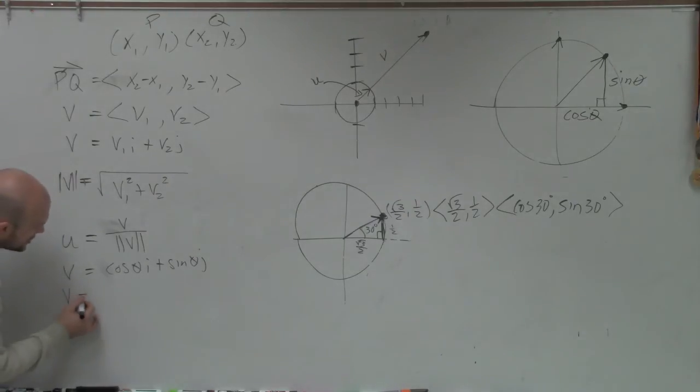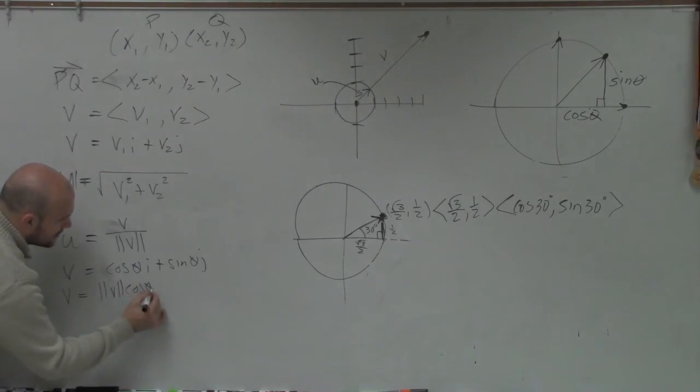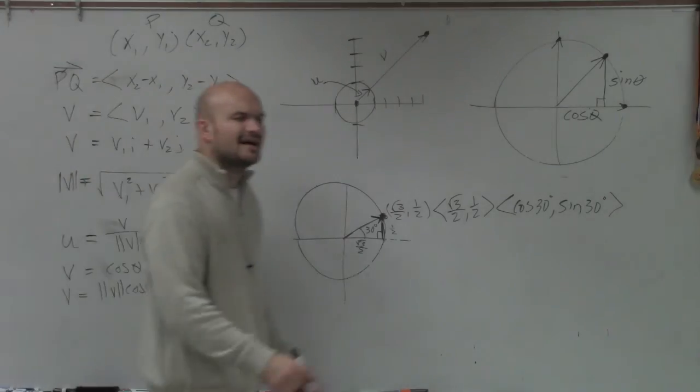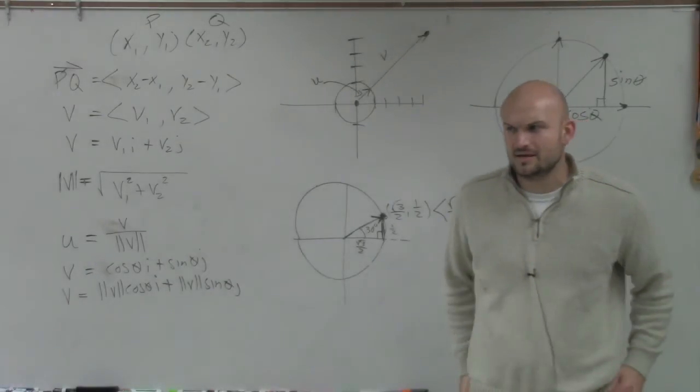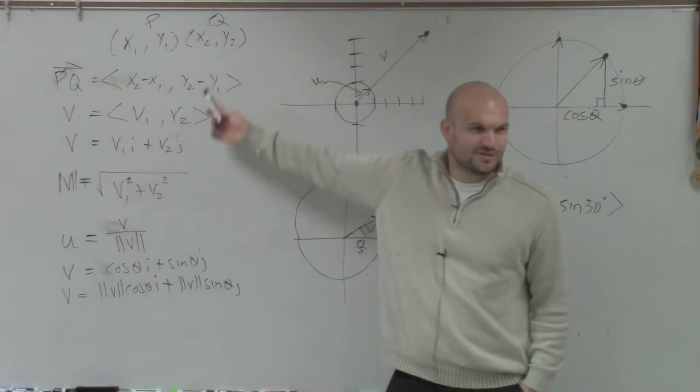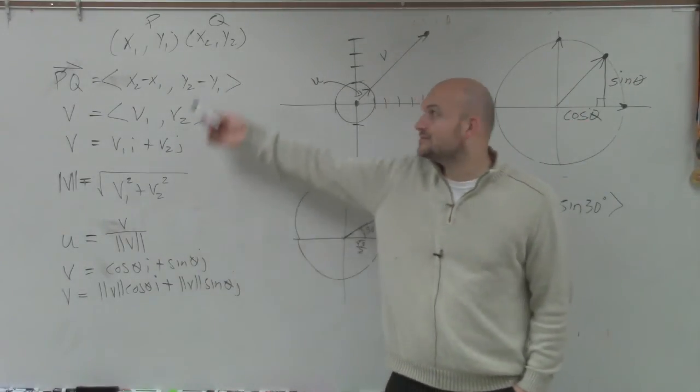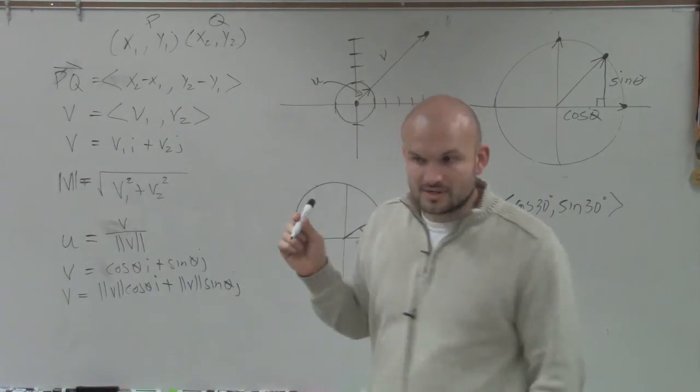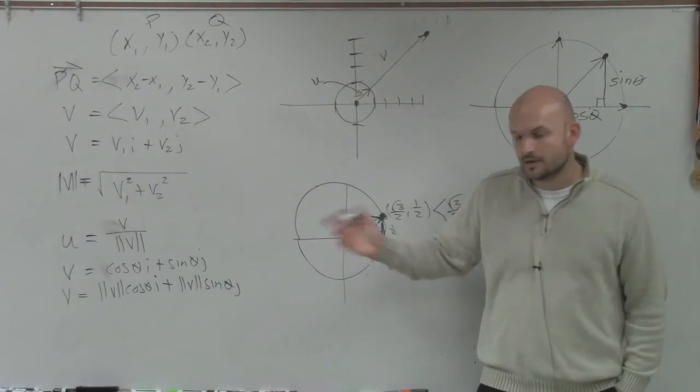So, therefore, if we're given a vector in terms of its magnitude and angle, I can now multiply by the magnitude of that vector. Does that kind of make a little sense? Anybody have any questions on that? This is all the important stuff, all the formulas and stuff you'll need to know. Any questions? Good?